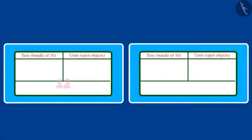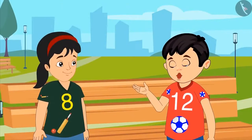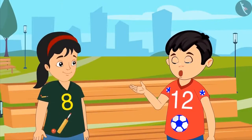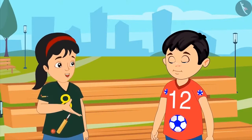But Pinky, 12 has 1 ten and 2 ones. And 8 has only 8 ones and not a single ten. Okay, you collect 12 leaves and I will collect 8 leaves, and then let us see who has more leaves. Okay, Chotto.